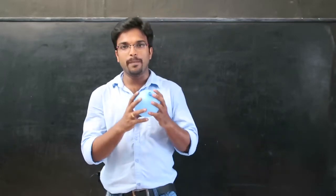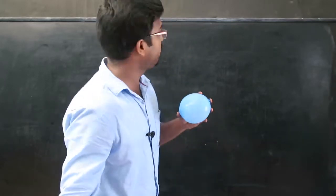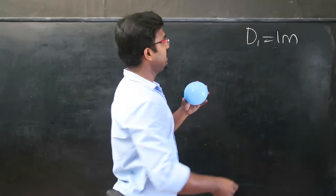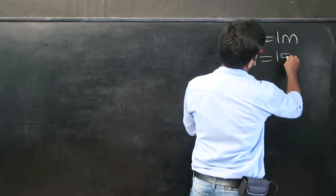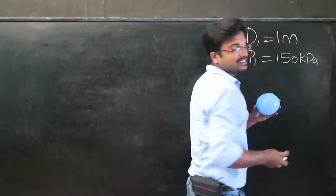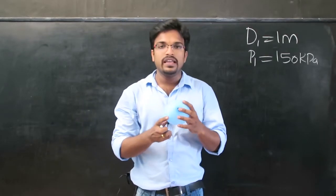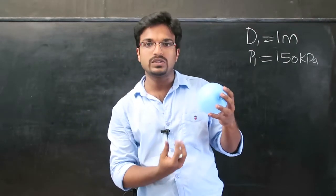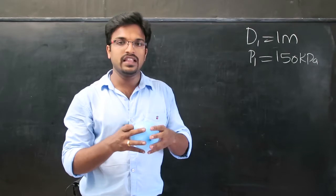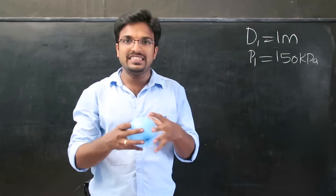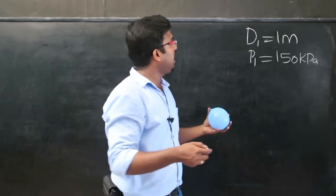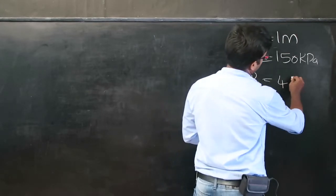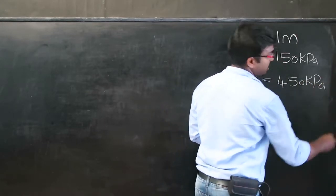According to the problem, I have a balloon with an initial diameter of 1 meter. It contains gas at an initial pressure of 150 kPa. Heat is supplied from outside, causing the gas to expand and the balloon to expand as well. The final pressure of the gas inside the balloon is given as 450 kPa.